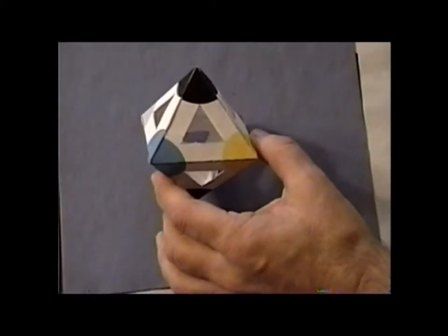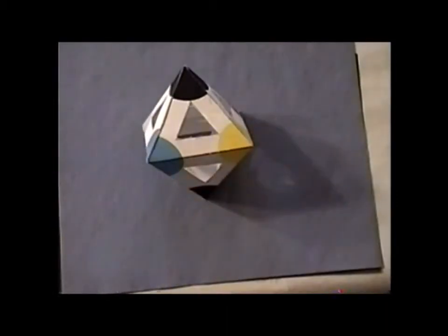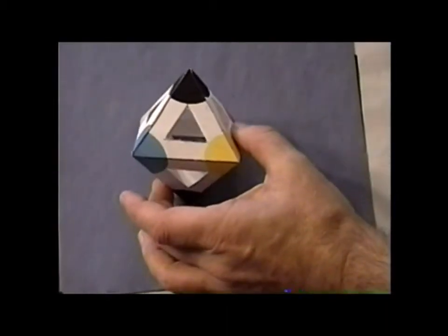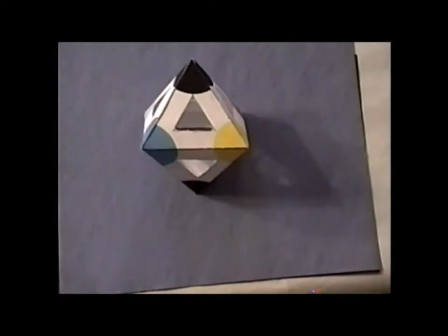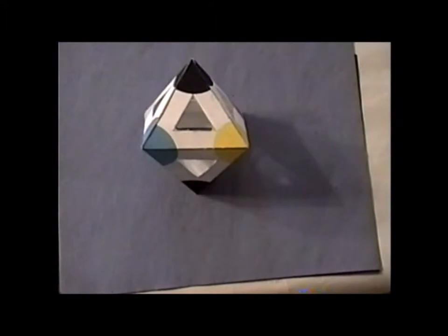We have the mirror and we have, of course, the identity operation E, which I always like to call the Rodney Dangerfield of symmetry operations because it doesn't get any respect.